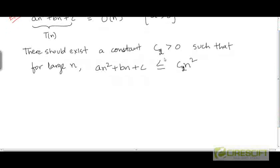How do we prove that there exists a constant c₂ greater than 0, such that c₂ times n² is an upper bound on this function for large n? Well, as in the Big O notation, let's try setting c₂ to be equal to a + 1.